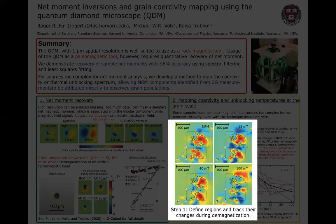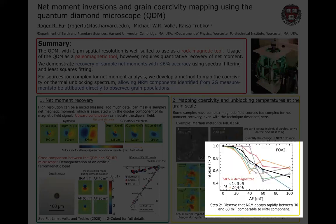In this example of natural remnant magnetization in a Martian meteorite, we defined a number of 10 to 100 micron-sized regions and quantified how their signal changes during AF treatment. We find that the main component of NRM decays between about 40 and 60 milliteslas. This information can be compared to the demagnetization sequence of these samples taken from, for example, the 2G magnetometer, to reveal the grain population that carries a particular NRM component.